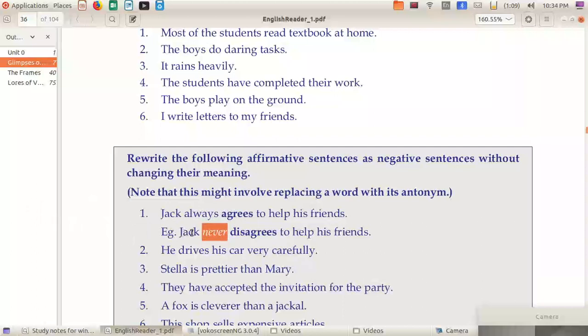Jack always agrees to help his friends. Example: Jack never disagrees. Never disagrees - so negative into negative become positive. He drives his car very carefully - he does not drive his car carelessly. Stella is prettier than Mary - Mary is not as pretty as Stella.